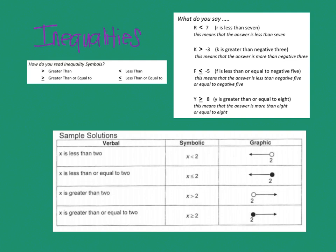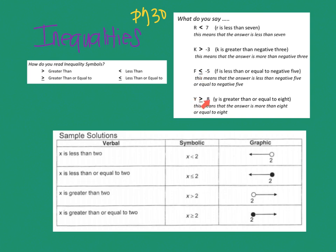Now we're going to move on to inequalities, on page 30 in your journal. The only difference in an inequality is the symbol: we have greater than, greater than or equal to, less than, or less than or equal to. When you read one of these, you say the letter then read the sign. So R is less than 7 means any number less than 7 is true. K is greater than negative 3. F is less than or equal to negative 5. Y is greater than or equal to 8.